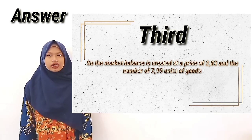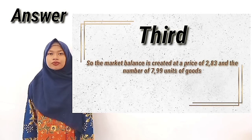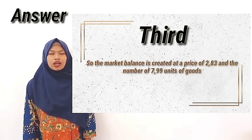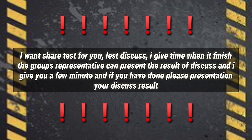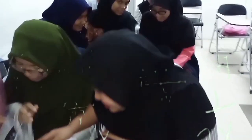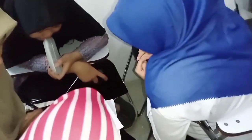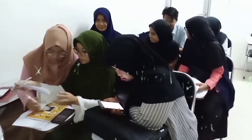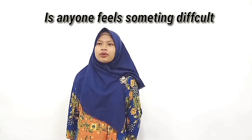Therefore, market balance is created at a price of 2.83 and a quantity of approximately 52 units of goods. Is anyone finding something difficult?